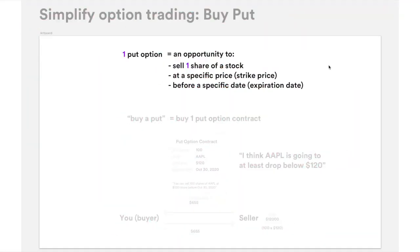This is essentially what buy put is. One put option means an opportunity to sell a share of a particular stock at a specific price — which we'll call the strike price — before a specific date, the expiration date. It might sound a little complicated already, because there are three things all baked into one concept of option.